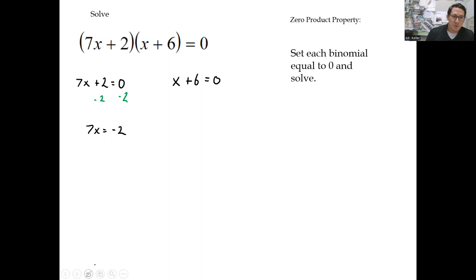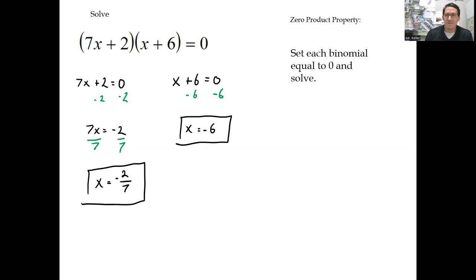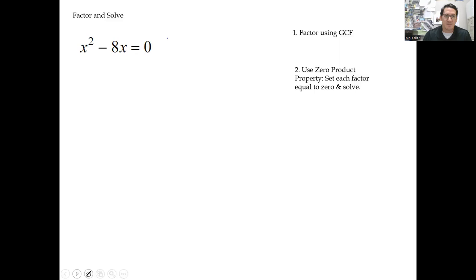I get seven X is equal to negative two sevenths. Over here, I subtract six and I get X is equal to negative six. So I have my two solutions: X is negative six or X is negative two sevenths. That's it. Set each binomial — each factor — equal to zero and then solve individually.